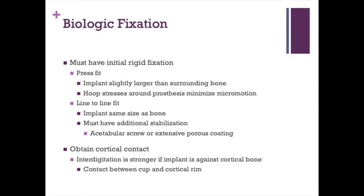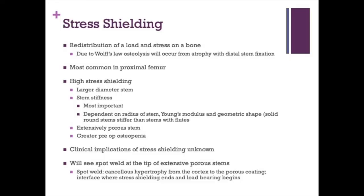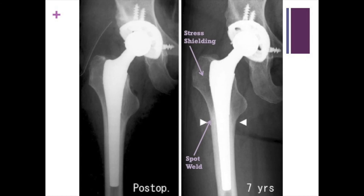You want proximal porous coating for less distal stress shielding; extensively porous coated stems used in periprosthetic fractures or revisions will likely cause stress shielding. Higher stress shielding is seen in larger diameter stems, stiffer stems, certain geometric shapes, extensive porous coating, and greater preoperative osteopenia. Clinical complications are largely unknown except for risk of proximal femoral fracture as bone becomes osteoporotic proximally. Here's an example showing a patient immediately postoperatively versus seven years later, with hypertrophic thickening at the spot weld and relative osteopenia proximal to it.